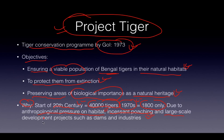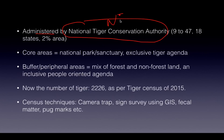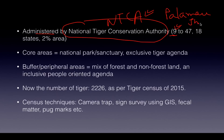Large-scale development projects such as dams and industries also caused tiger population decline — that is why Project Tiger was launched. It is administered by the National Tiger Conservation Authority (NTCA), a statutory authority made under law by Parliament. The first tiger reserve was Palamu Tiger Reserve in Jharkhand. Now there are 47 tiger reserves covering 18 states, covering two percent of India's land area.